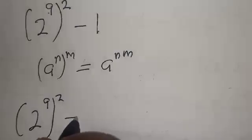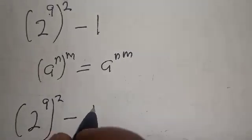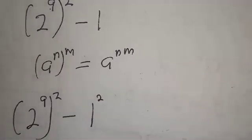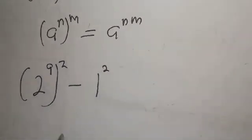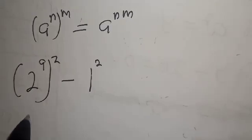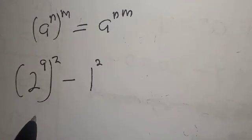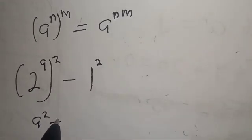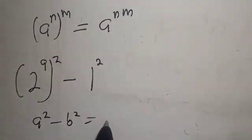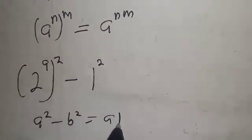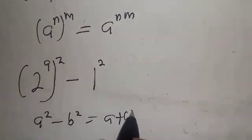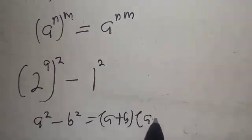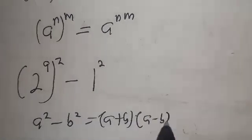So we have 2 raised to power 9, squared, minus 1 squared. This is a difference of two squares. The formula is: a squared minus b squared equals a plus b multiplied by a minus b.